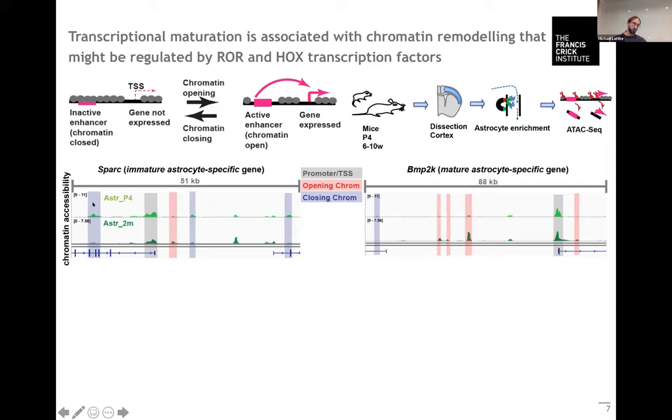Close to the transcriptional start site of immature astrocyte genes we find a closure of chromatin elements, whereas around mature astrocyte genes there is an opening of enhancers between P4 and two months of age.